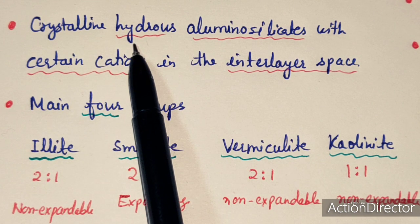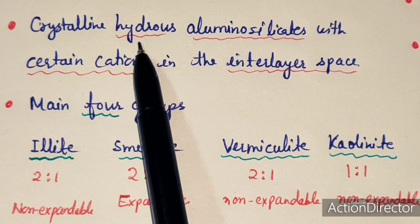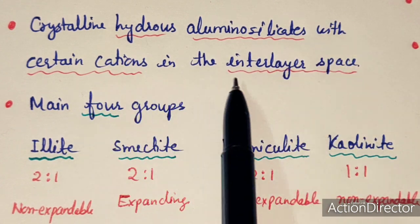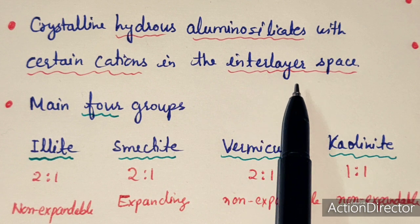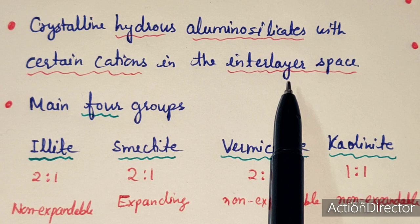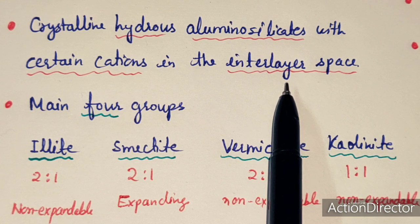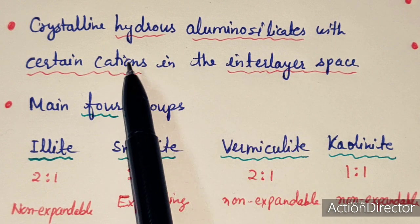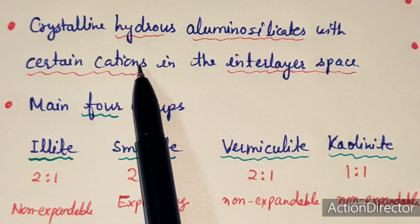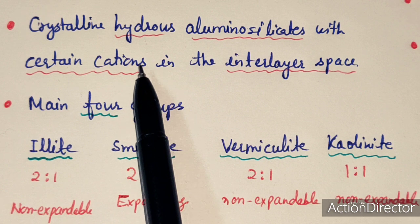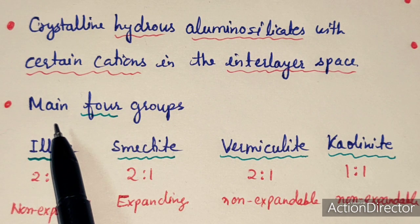Clays are hydrous alumino-silicates — they are crystalline and contain water molecules. Generally they are hydrous alumino-silicates with certain cations in their interlayer space. In the montmorillonite structure, water molecules and cations like sodium and calcium are present at the interlayer space.